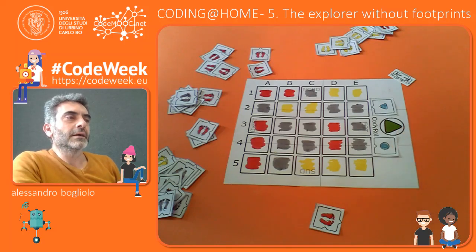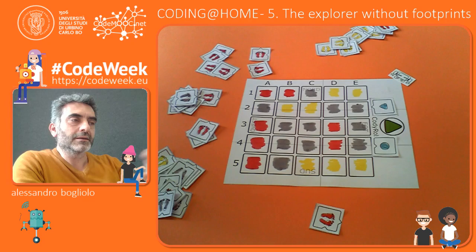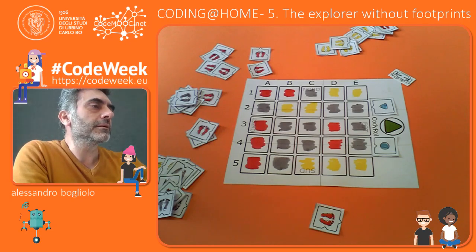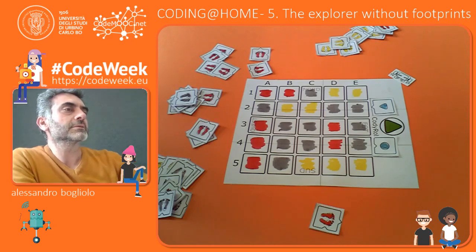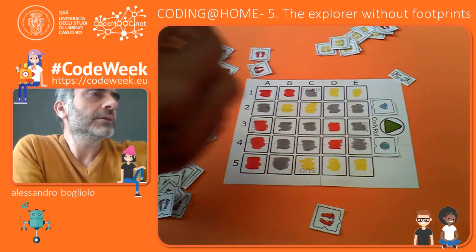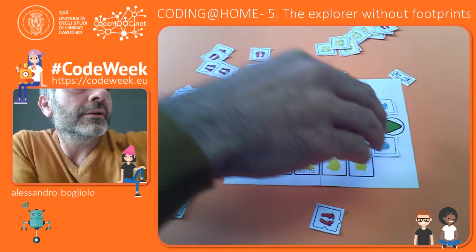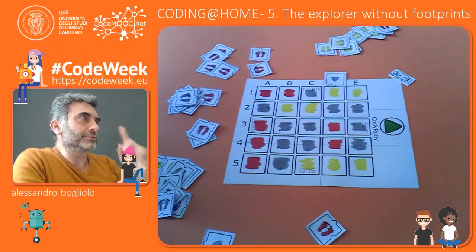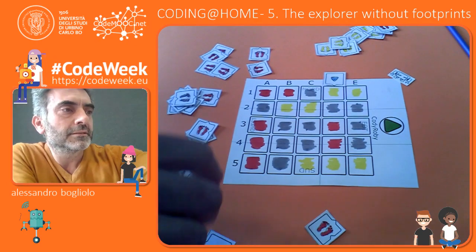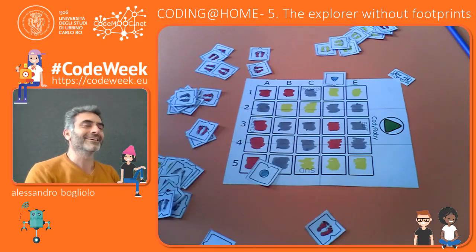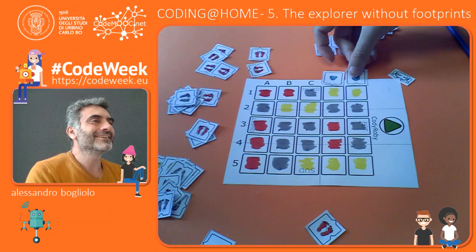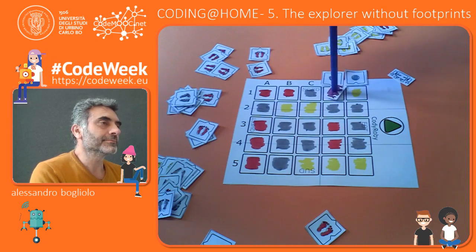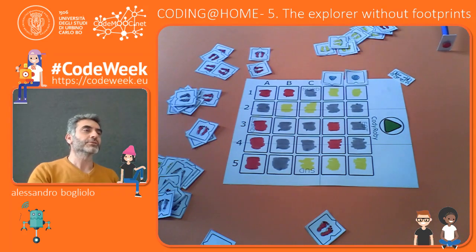Another way of playing with this colorful checkerboard is to take an entrance point — like this one — and ask the other player to foresee the exit point. Without trying, you have to just think about it, place the marker, and then check if you were right. Probably it can be here. I'm going to go left. Okay, this was very, very easy.